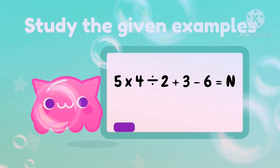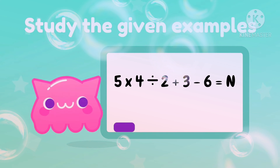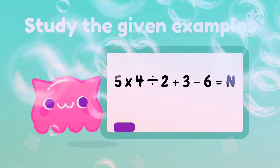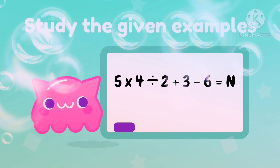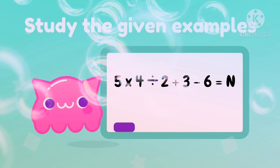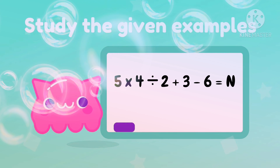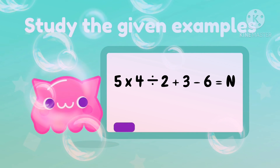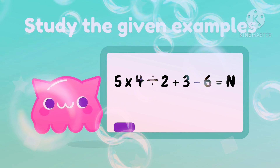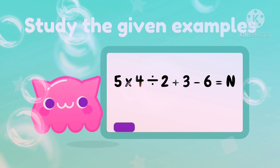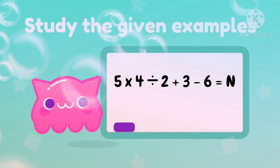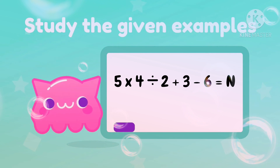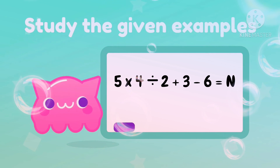Let us study the given example. We have 5 times 4 divided by 2 plus 3 minus 6 is equal to N. As you notice, all four basic operations are involved. If multiplication and division are used in a row, we follow the order of operations from left to right — we perform multiplication or division before proceeding to addition or subtraction. From the given example, we have to do multiplication first.